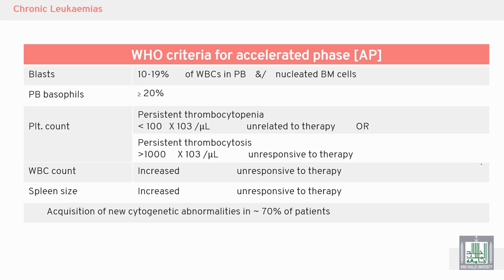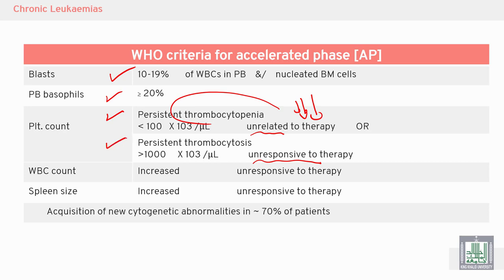The WHO classification criteria for the accelerated phase include: blasts at 10-19% in blood or bone marrow, basophils at 20% or more, and thrombocytopenia unrelated to therapy or persistent thrombocytosis unresponsive to therapy. We may also see increased white blood cell count and increased spleen size, both unresponsive to therapy.